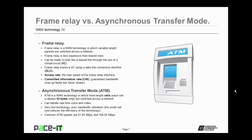There are two terms associated with frame relay that you should be aware of. The first is access rate — that is the maximum speed of the frame relay interface. The other term is the committed information rate, the CIR, which is the guaranteed bandwidth that a customer receives — that's the minimum speed of that frame relay network. The access rate may be higher, but the customer is always guaranteed the committed information rate.